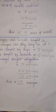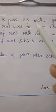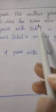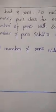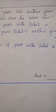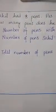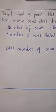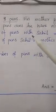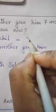Question C: Sahil had eight pens. His mother gave him seven more. How many pens does he have now? That means Sahil is having eight pens with him and his mother gave him seven more pens, so we have to find the total. The first part: Sahil had eight pens. So the statement will be: number of pens with Sahil is equal to eight pens.